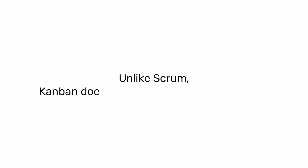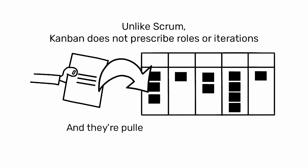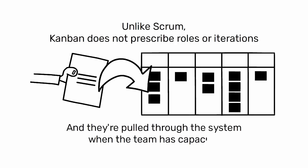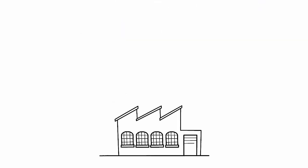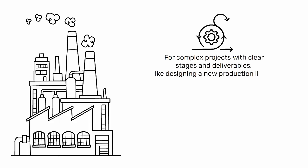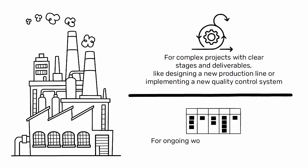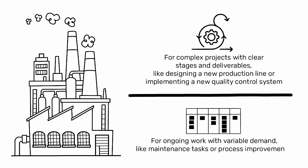Unlike Scrum, Kanban does not prescribe roles or iterations. Work items can be added at any time, and they are pulled through the system when the team has capacity. In an industrial engineering context, Scrum could be used for complex projects with clear stages and deliverables, like designing a new production line or implementing a new quality control system. Kanban could be used for ongoing work with variable demand, like maintenance tasks or process improvements.